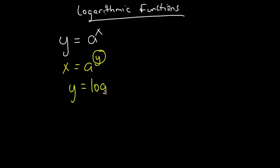y is equal to log base a of x. I start with an exponential function, and to find its inverse, I switch my x and my y variable, because that's what we do when we find inverses. Then to isolate y, which is an exponent, we use logarithmic functions. To bring that exponent down, we create what we call a logarithmic function. That's why they're very important — if I'm ever trying to solve for an exponent, I need to use log. The base of the log is the same as the base of the exponential function, in this case a.